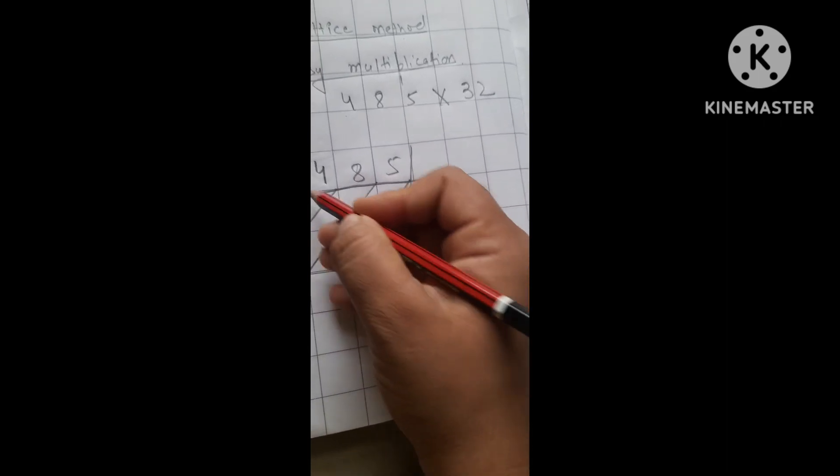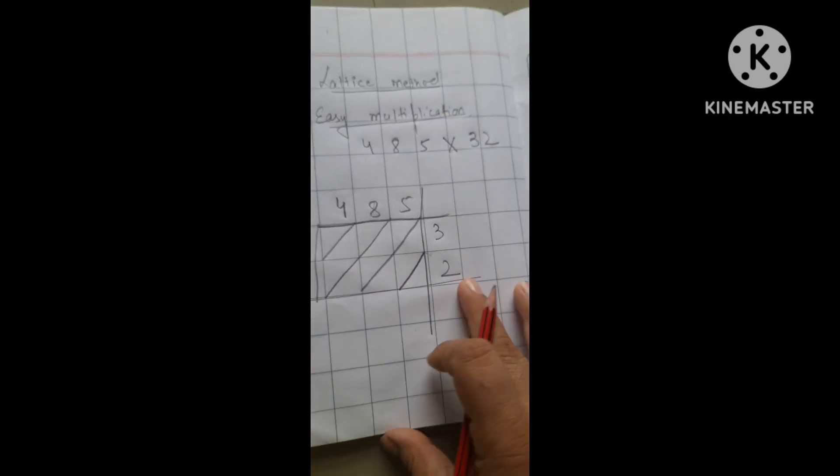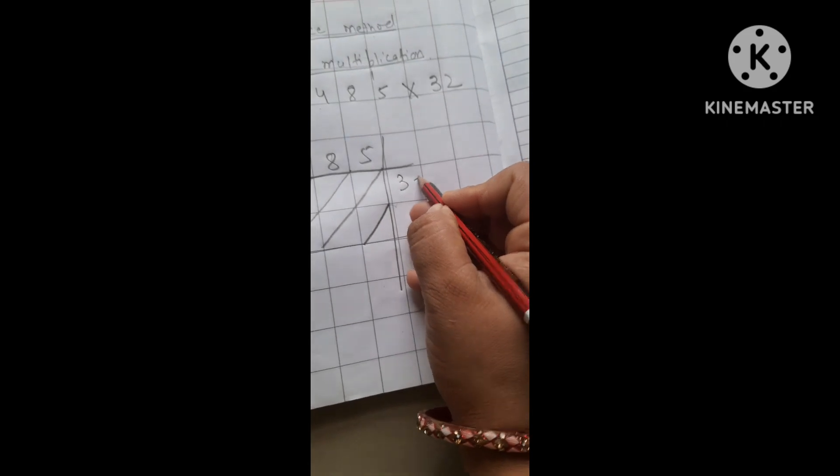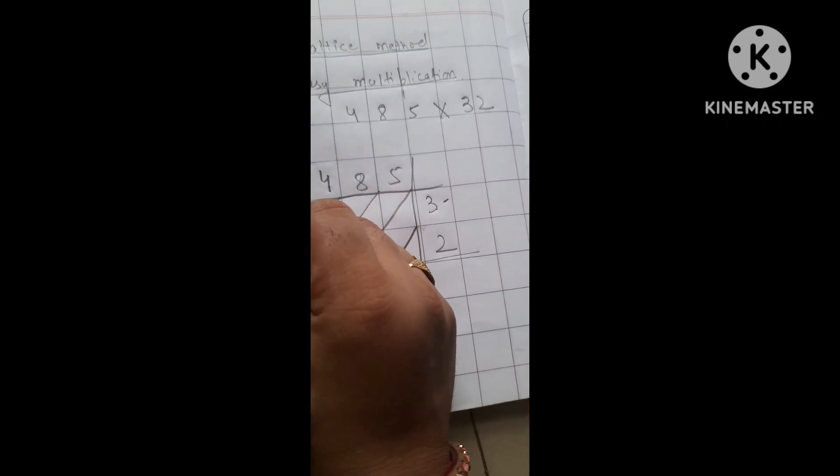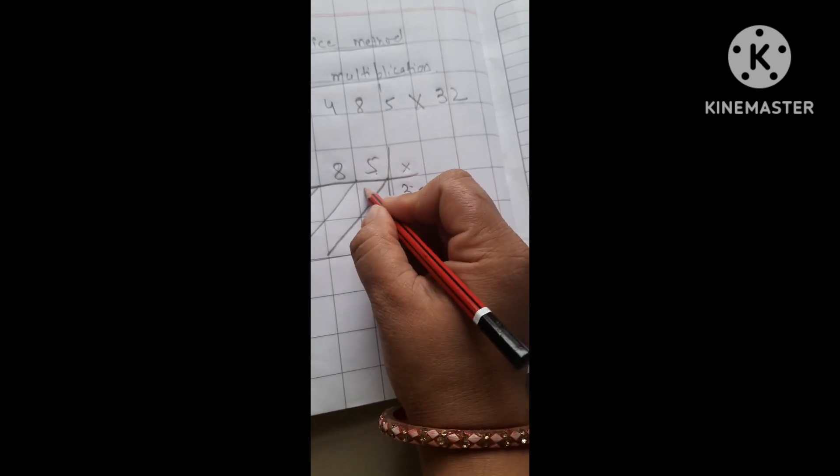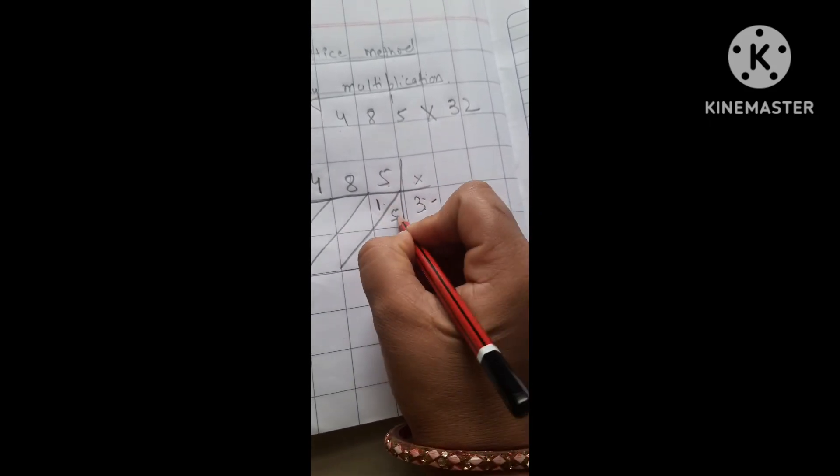After that, we will start multiplying. Now, the first term is 32. First, we will multiply all the digits. 5 into 3 is 15, so 1 over and 5 like this.